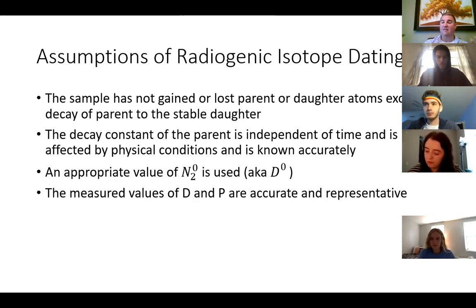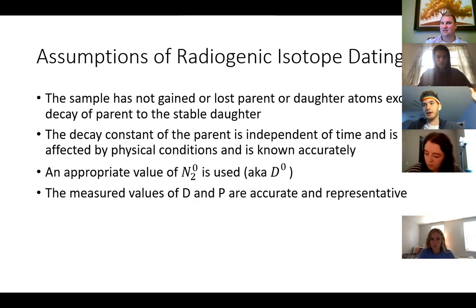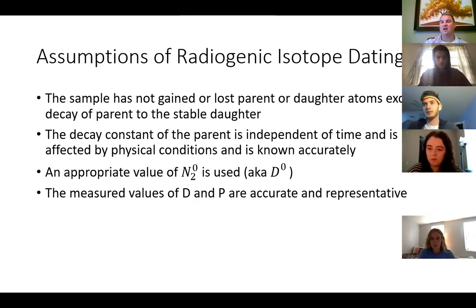Alpha decay and beta-minus decay are okay. What else could happen besides the daughter being radioactive? Would it be a situation where another parent produces the daughter — so the parent itself is being formed from something before it? Yes — the parent itself is being generated from another decay chain.